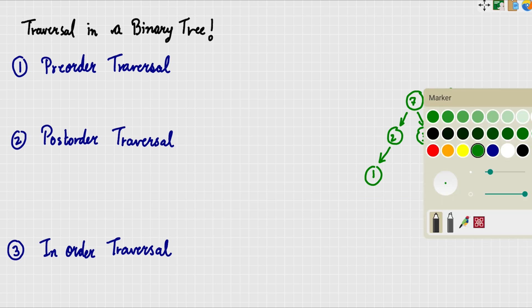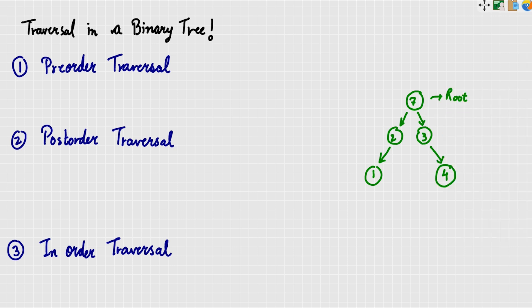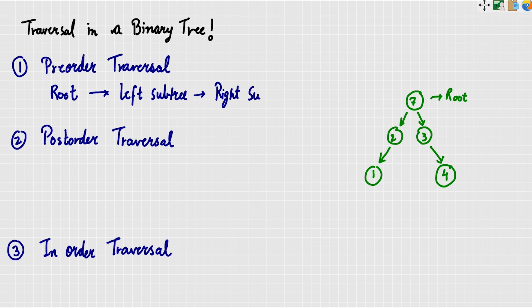We will see how to do pre-order traversal. Pre-order traversal is very simple: first you visit the root, then the left sub-tree, then the right sub-tree.